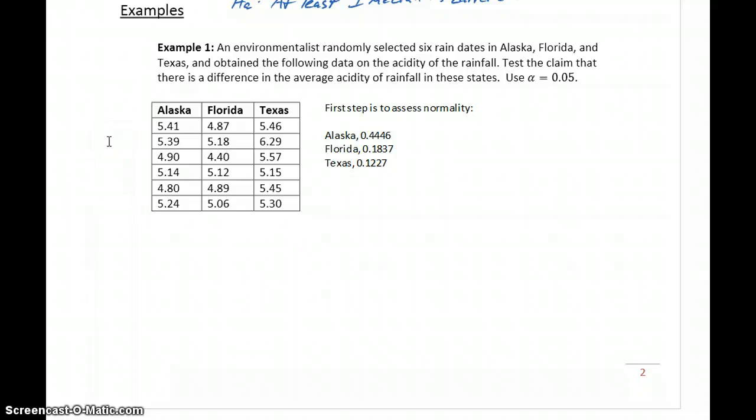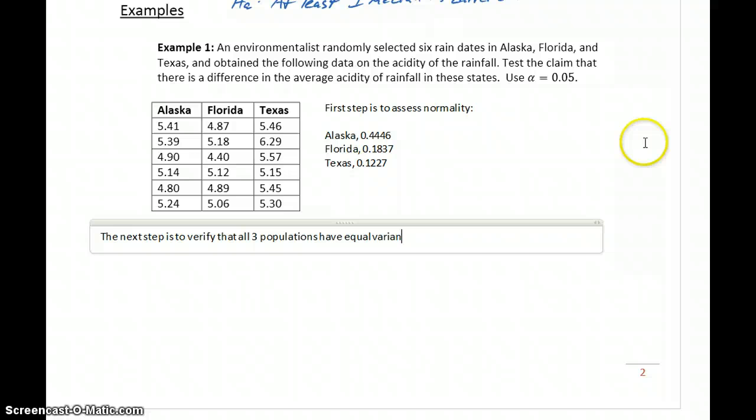of our data sets comes from a normally distributed population. The next step is to verify that all three populations have equal variances or standard deviations.